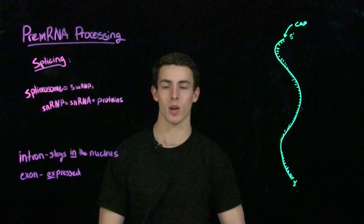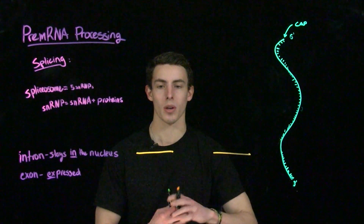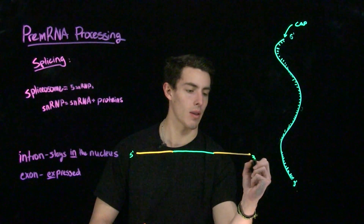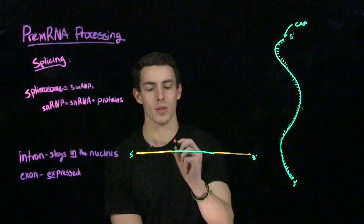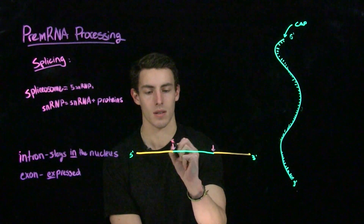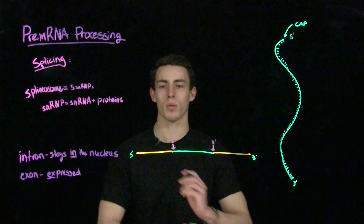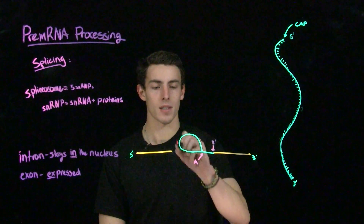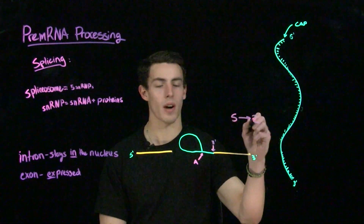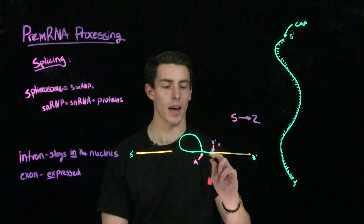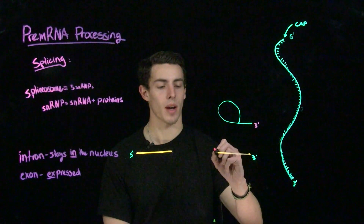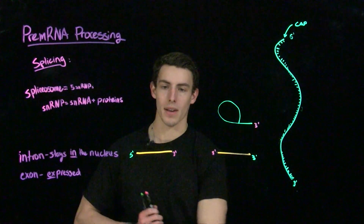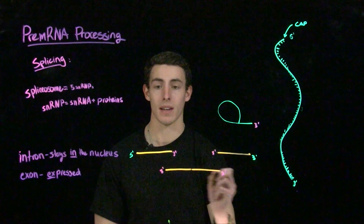Let's take a look at how these spliceosomes are going to remove introns and join exons. We'll draw the exons in orange and the intron in green, with the 5' end and 3' end marked as convention. With any intron, we're going to have a 5' and a 3' cleavage site. The spliceosome is going to make a cut at the 5' cleavage site. The cleaved 5' end is going to loop around and make a 5'-to-2' phosphodiester bond within an adenosine base. Next, we're going to have cleavage at the 3' splice site. After cleavage, the now-free 5' and 3' ends of the two exons are going to be joined together by the spliceosome, forming one complete mRNA molecule that can go on to be translated.